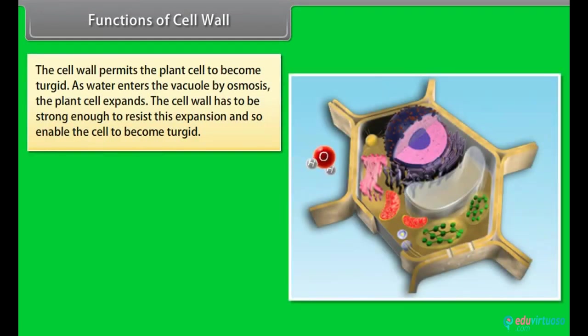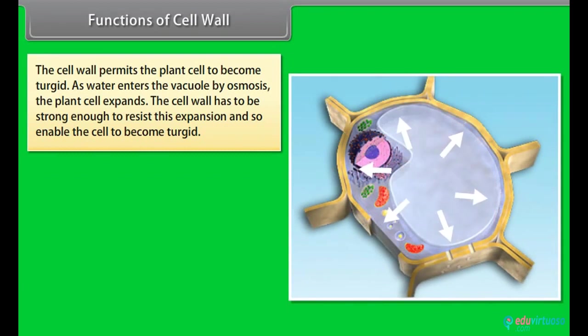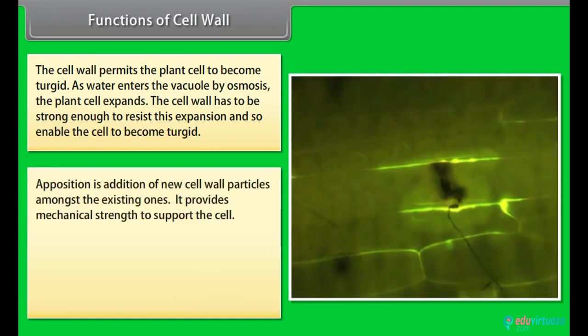The cell wall permits the plant cell to become turgid. As water enters the vacuole by osmosis, the plant cell expands. The cell wall has to be strong enough to resist this expansion and so enable the cell to become turgid. Apposition is addition of new cell wall particles. It provides mechanical strength to support the cell.